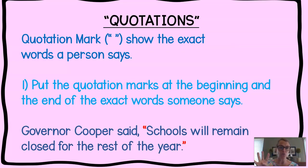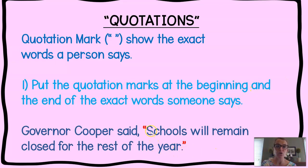We're going to learn four rules that deal with quotation marks. The first rule is you're going to put the quotation marks at the beginning and at the end of the exact words someone says. So let's look at a sentence: Governor Cooper said schools will remain closed for the rest of the year. We put the quotation marks around the exact words Governor Cooper said — 'Schools will remain closed for the rest of the year and distance learning will continue.' Quotation marks go around someone's exact words.